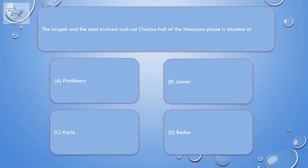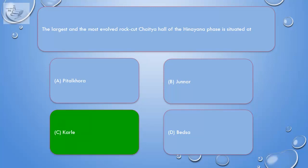Question. The largest and the most evolved rock-cut chaitya hall of the Hinayana phase is situated at — A. Pitalkhora. B. Junnar. C. Karle. D. Bedsa. Correct answer is C. Karle.